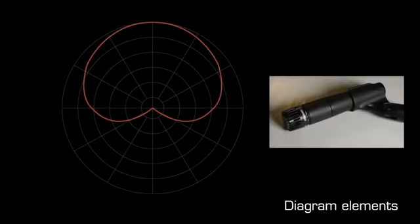The polar pattern diagram takes the form of a two-dimensional contour map showing the microphone's output at different angles of incident of a sound wave.